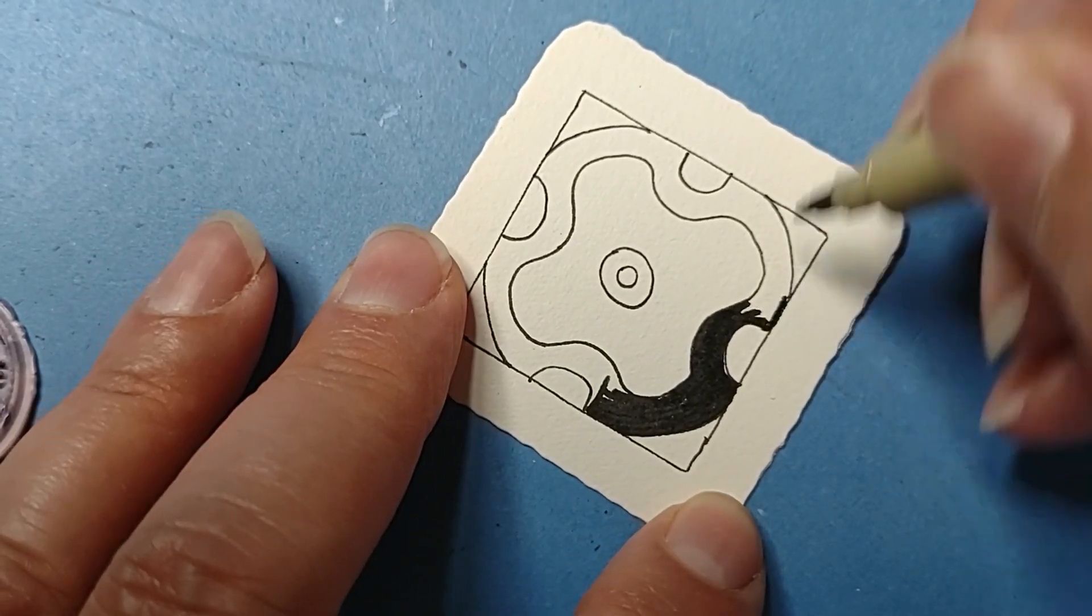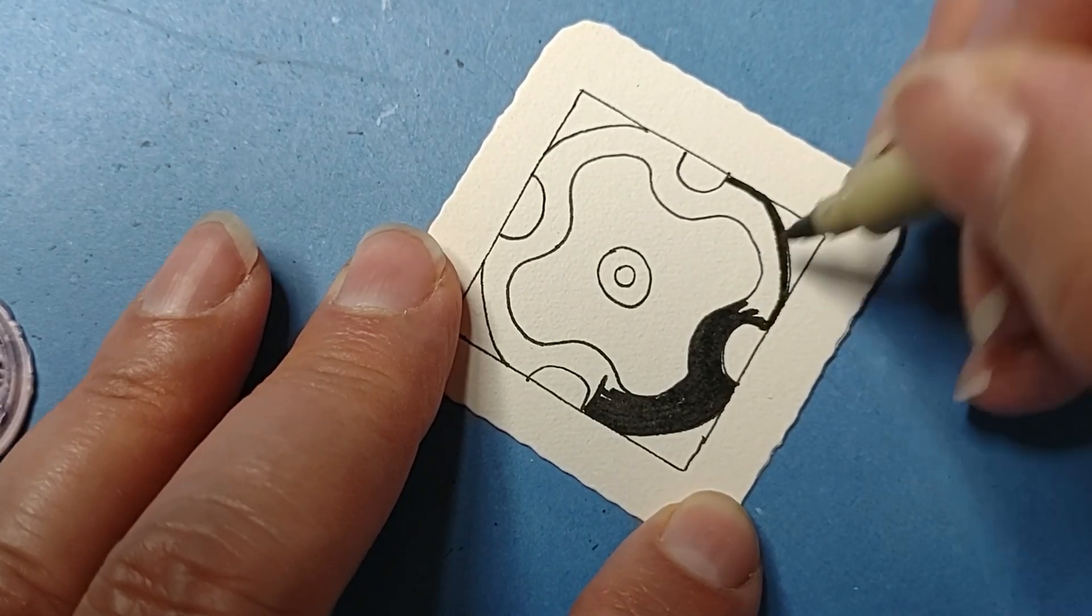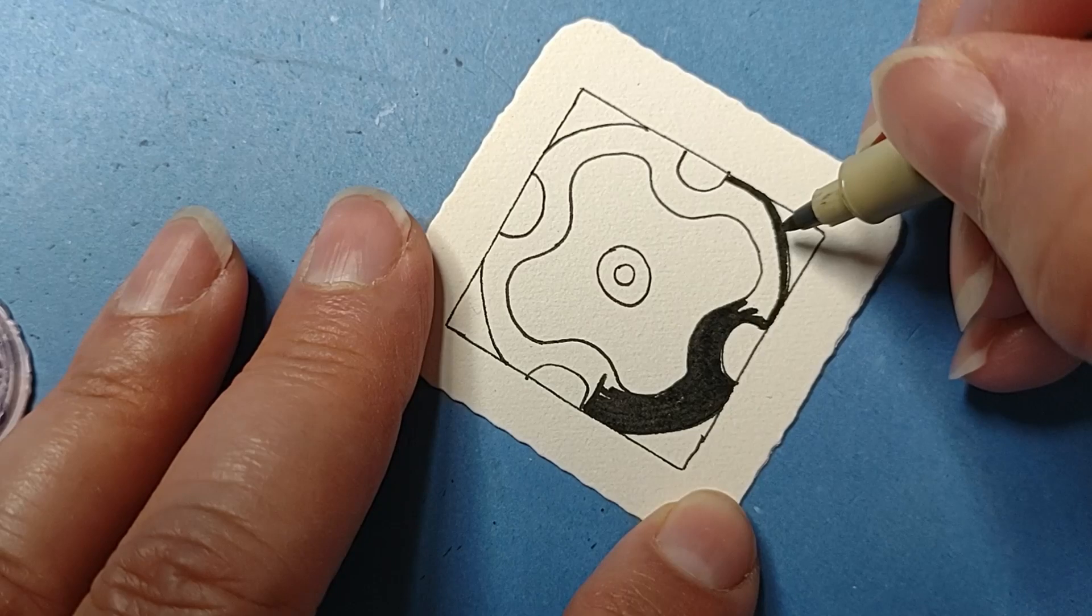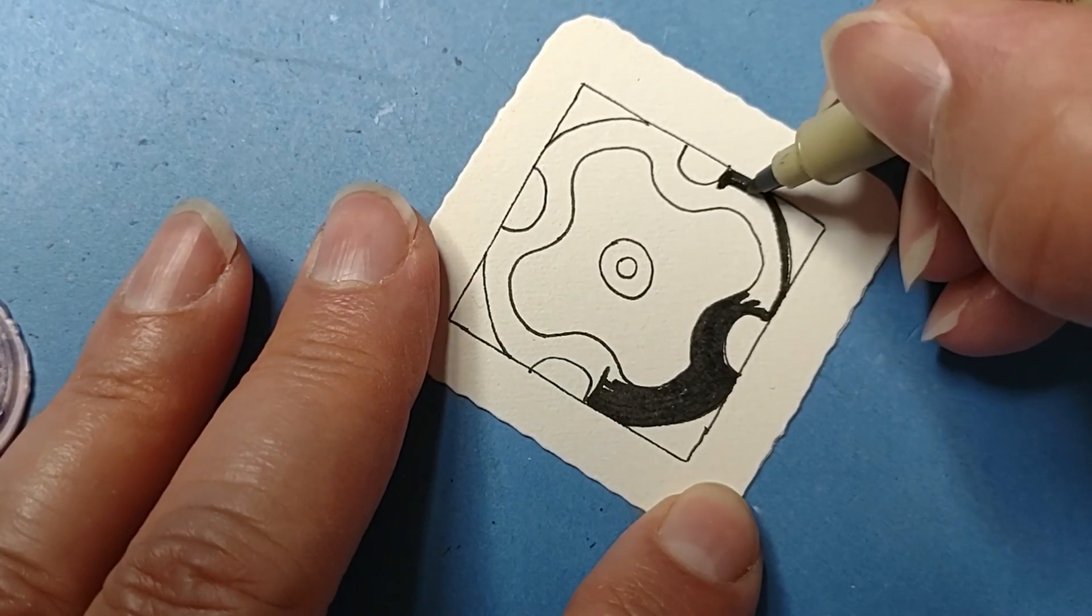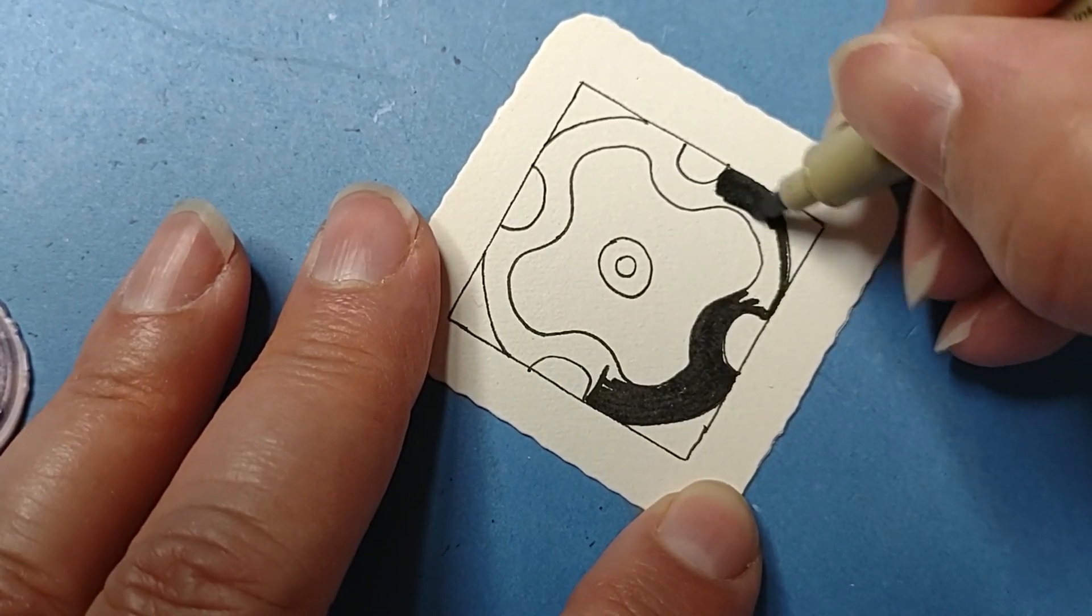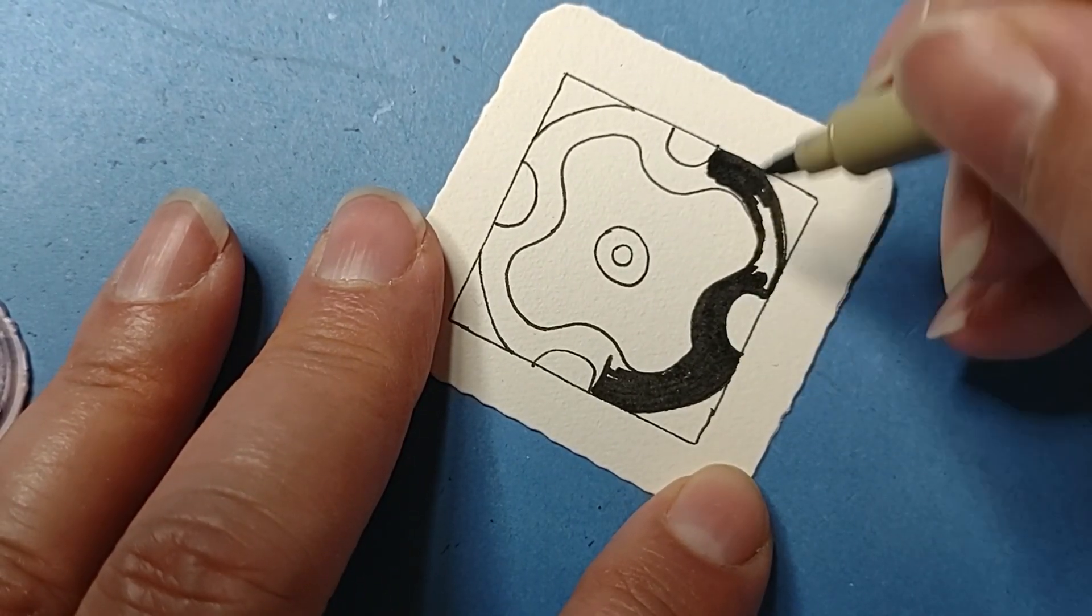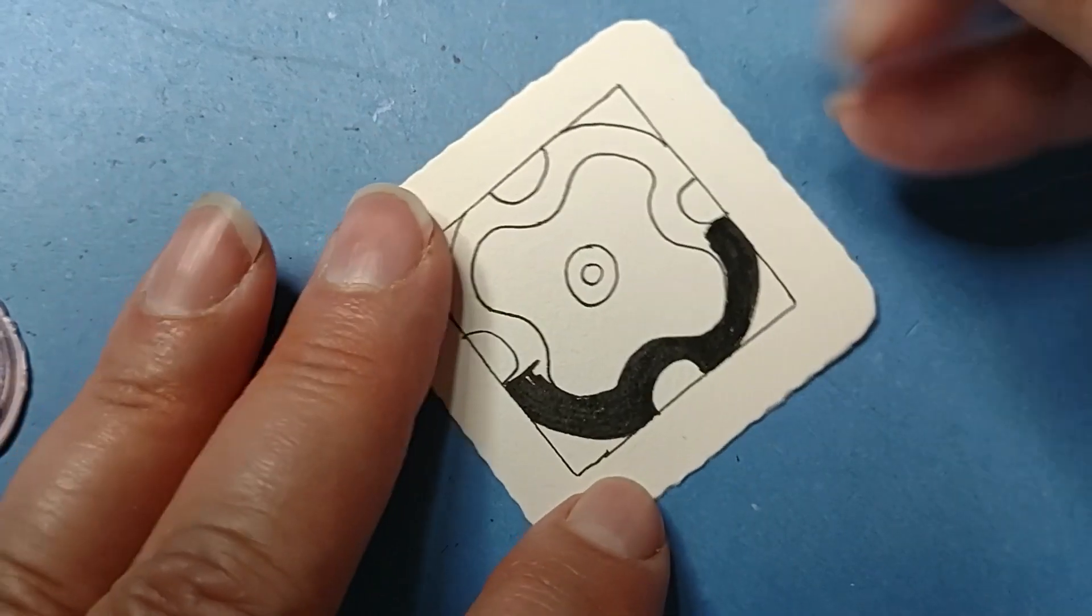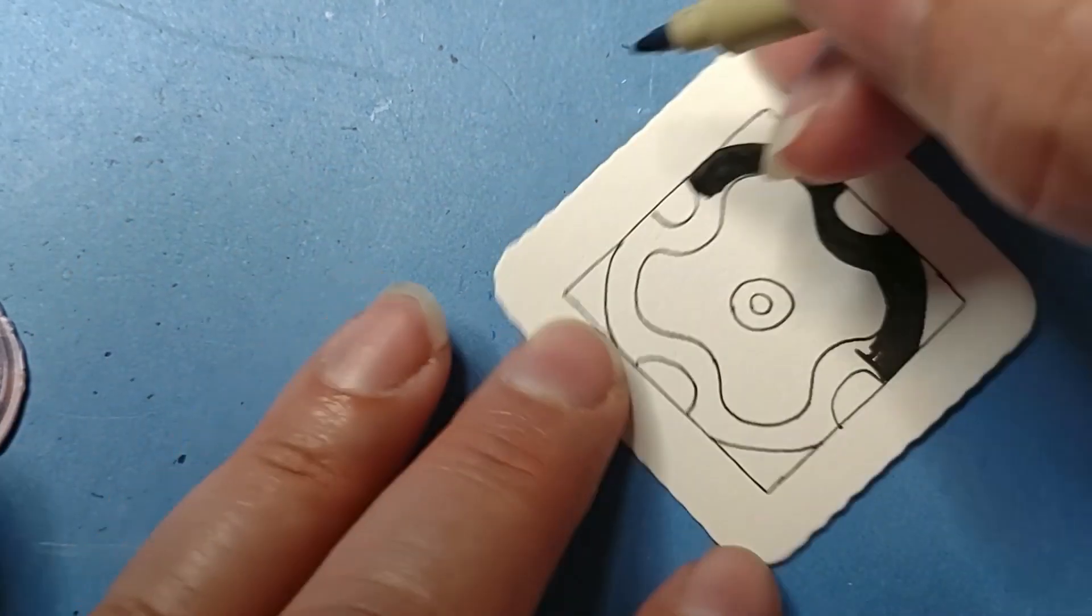The only caveat with this as a course correction is you can only expand out. If I decided this is too close to this edge, if it was too far that way then it's easy because I can just take some shavings off. It's just you can't go the other direction obviously.